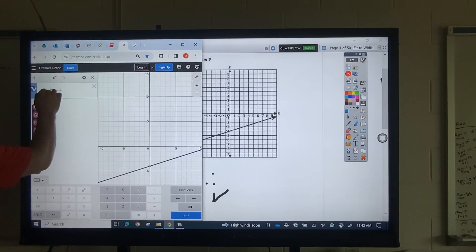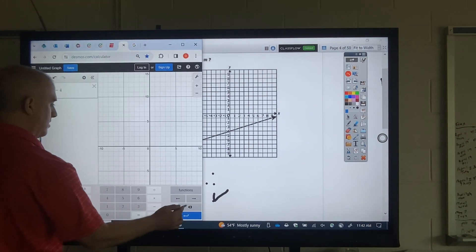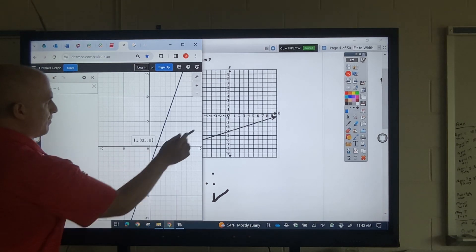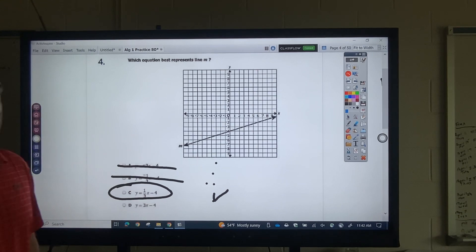Let's look at this 3x minus 4. Okay, well clearly that crosses at 1.3. Well, that's not it. So that's going to be that example.